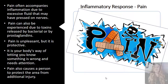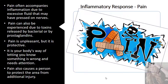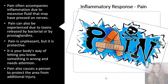The inflammatory response also includes pain. Pain often accompanies inflammation due to the excessive fluid that may have pressed on nerves. Pain may also be experienced due to toxins released by bacteria or prostaglandins. Pain is unpleasant, but it is protective. It is your body's way of letting you know that something is wrong and needs attention. Pain also causes a person to protect that area from further injury.